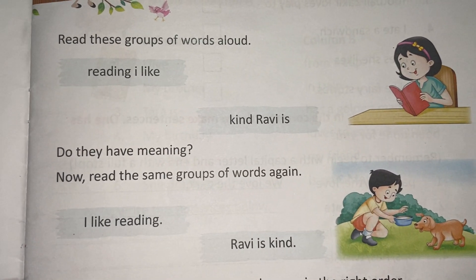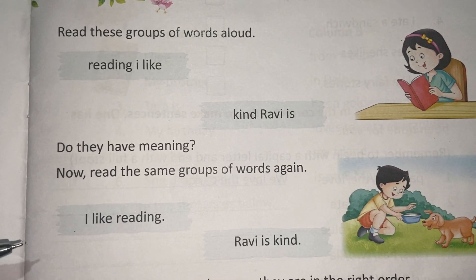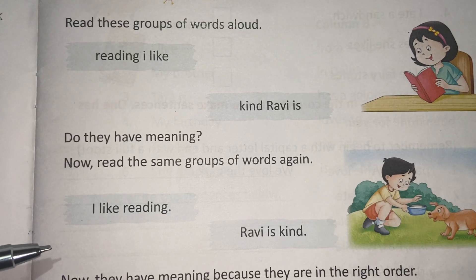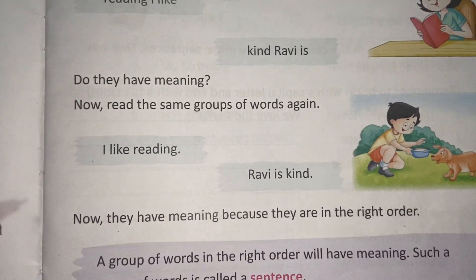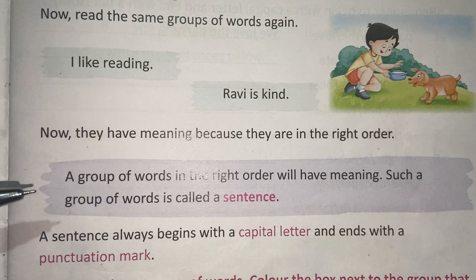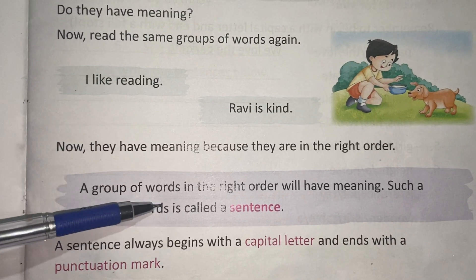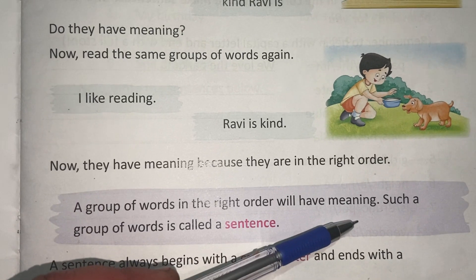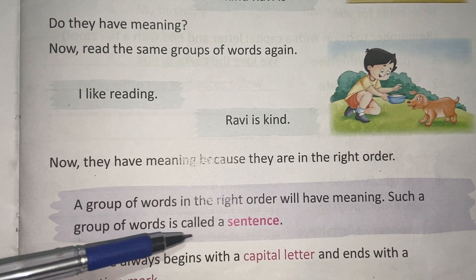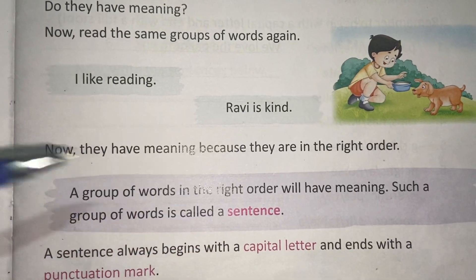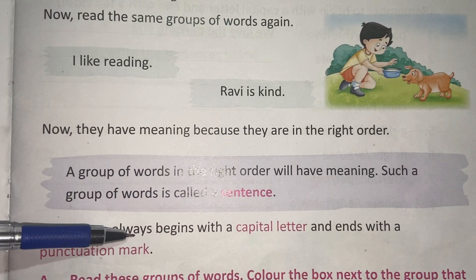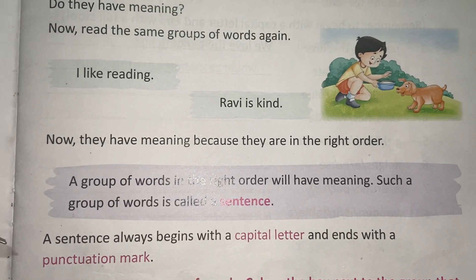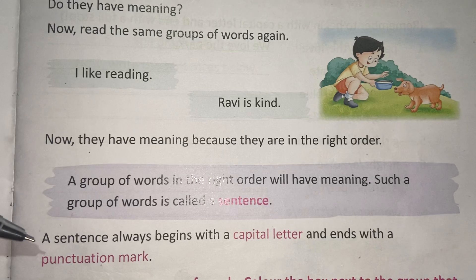Your sentence always starts with a capital letter and ends with a full stop or question mark. Definition of a sentence: a group of words in the right order that has meaning is called a sentence. A sentence always begins with a capital letter and ends with a punctuation mark.